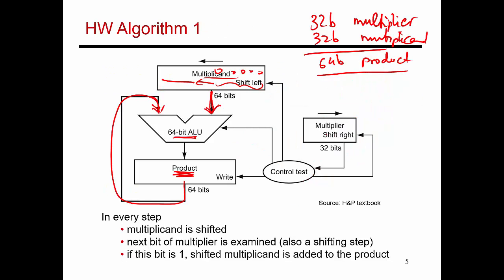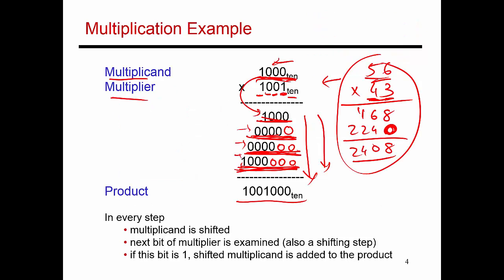Okay, so that decision is based on the corresponding bit in that multiplier. So the multiplier is placed over here, and it keeps shifting to the right because what I'm doing is looking at the least significant bit of the multiplier, then looking at the next bit, then looking at the next bit and so on. So you place this value in the multiplier register, examine the least significant bit, and then shift it to the right.